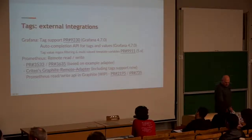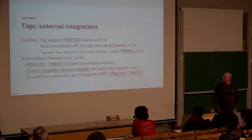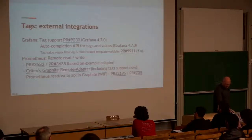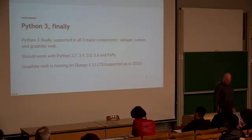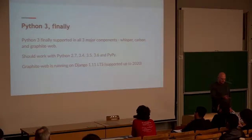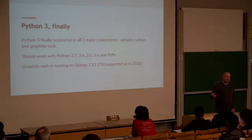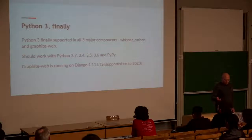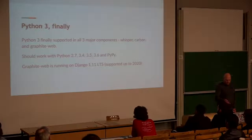This seems to be interesting. For example, go-graphite is ready for use. It's written in Go, quite fast. We can use it right now. Finally, we have Python 3 support. All three major components - Whisper, Carbon, and Graphite-web - support Python 3. Not just 3, but all Pythons from 2.7 to 3.6 and PyPy also. Graphite is supported in Django 1.11, which supports Python 3, which is a long-term supported release up to 2020.